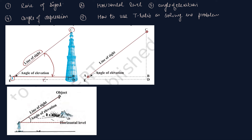यहाँ हम लिखते हैं: यह horizontal level। इस diagram में A को आप B से मिला दें तो यह horizontal level हो जाएगा, और यह वाला part जो है वो हो जाएगा angle of elevation। तो हमने अभी तक पढ़ लिया: line of sight क्या होता है, horizontal level क्या होता है, angle of elevation सीख लिया।